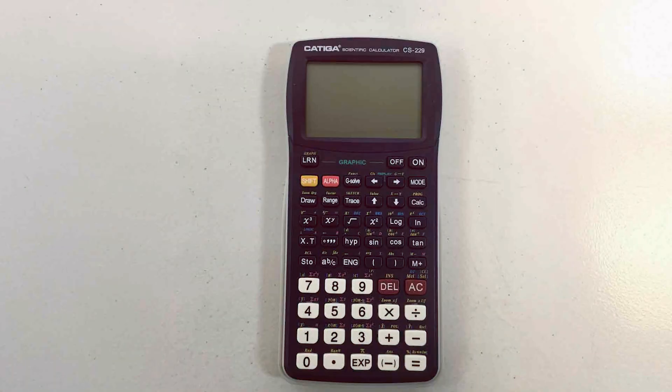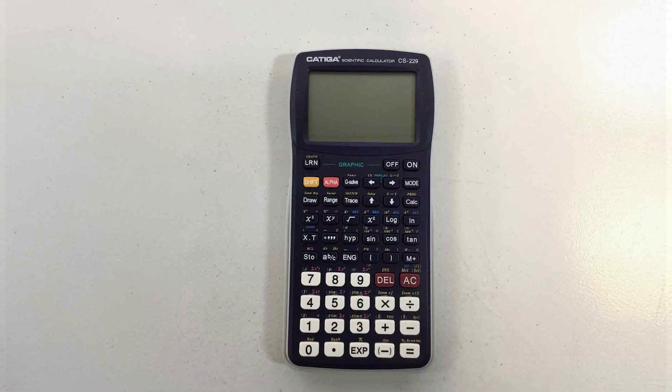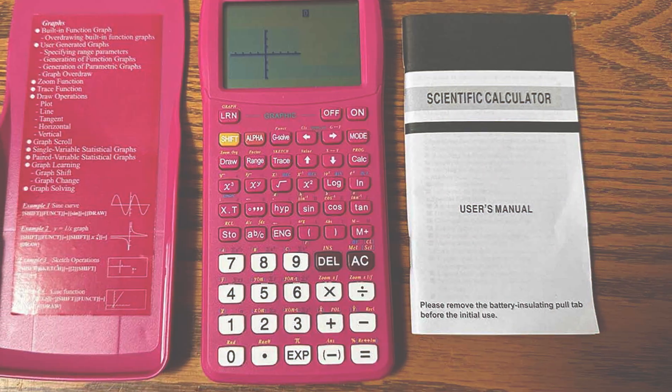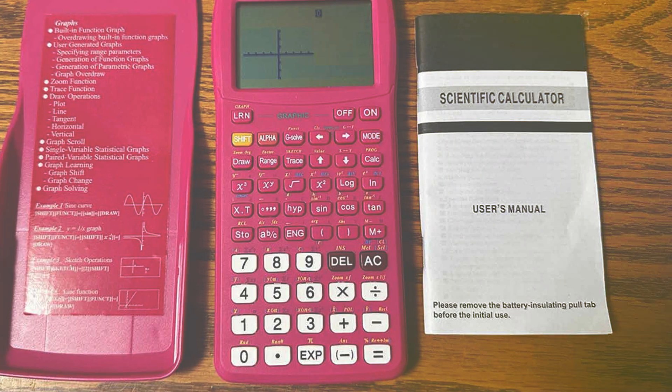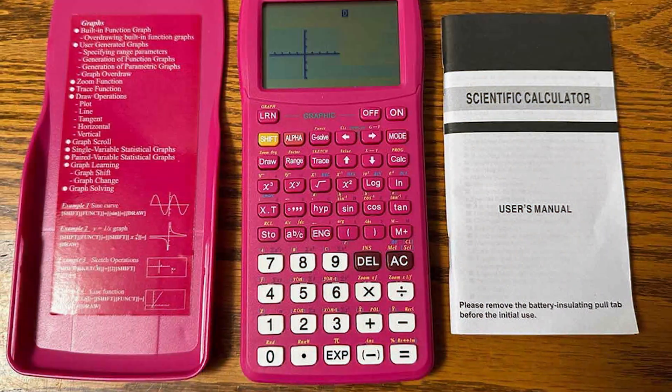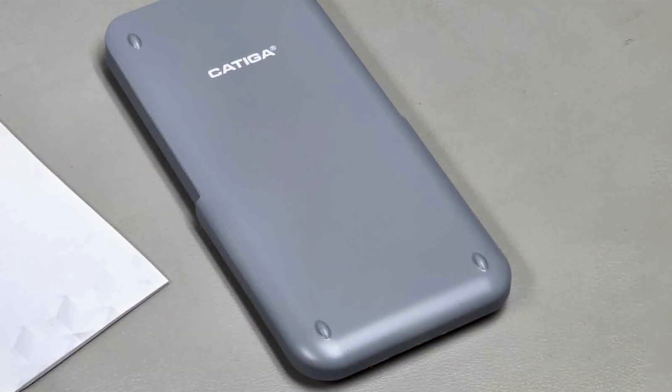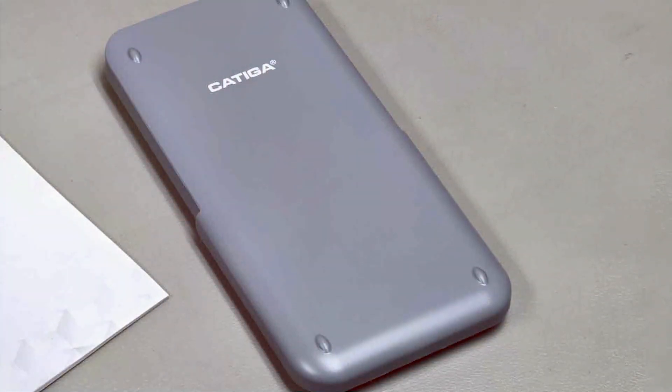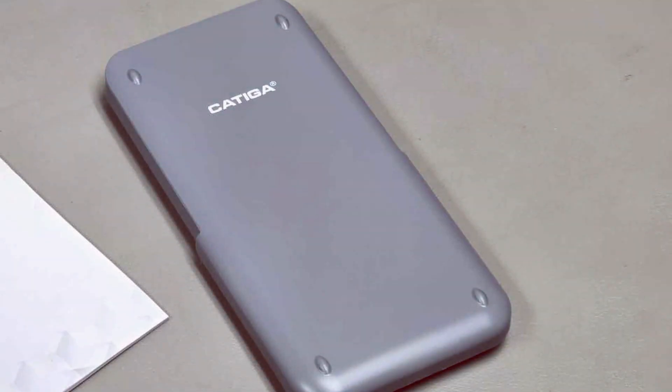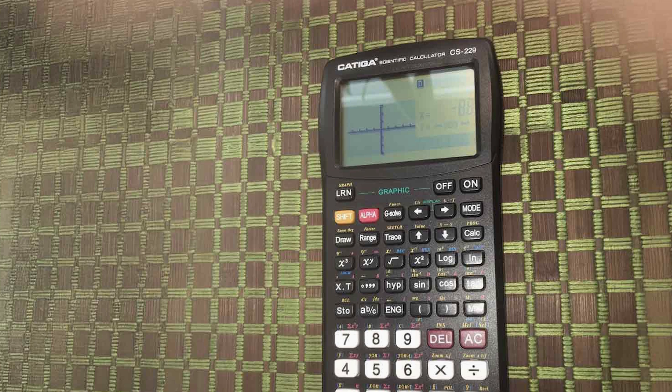In terms of quality, the CATIG ACS229 supports over 300 functions, including advanced mathematical operations and graphing capabilities. This feature allows users to visualize equations, making it an excellent tool for both students and professionals in fields such as engineering and physics. The ability to switch between different modes further enhances its versatility, accommodating a wide range of mathematical tasks.